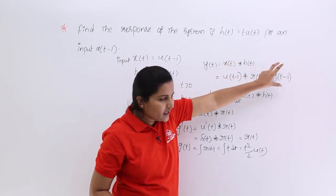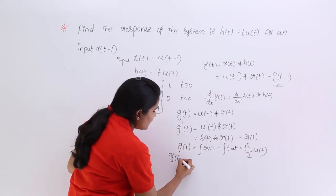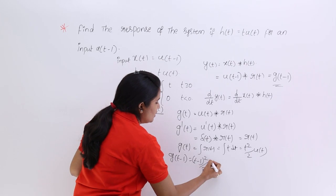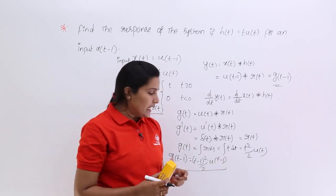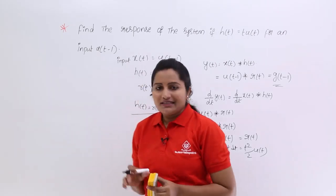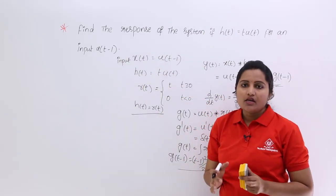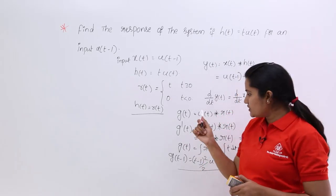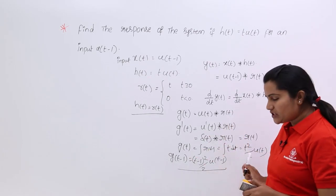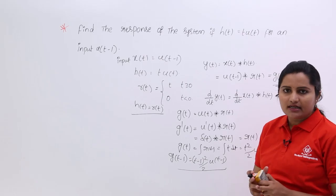Since u(t-1) convolved with r(t) equals g(t-1), we substitute t-1 into the standard result. Therefore g(t-1) = (t-1)²/2 · u(t-1), which is the response of the system when the impulse response is h(t) = t·u(t) and the input is u(t-1). The key takeaway is to use the differentiation property, find the standard convolution of unit step with ramp, then substitute the given shift into that standard result.